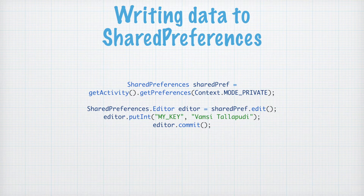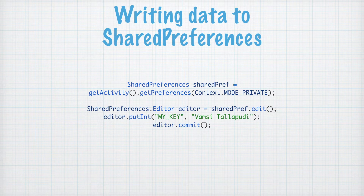We can write data to shared preferences using the following two lines. We need to get access to the Editor interface which is available in shared preferences — we call the instance of shared pref and then call the edit() method, as shown.